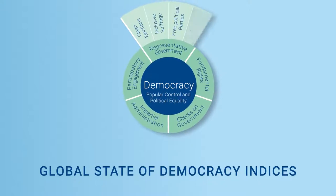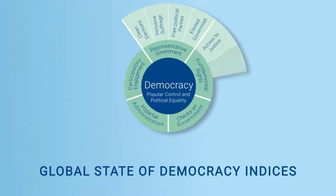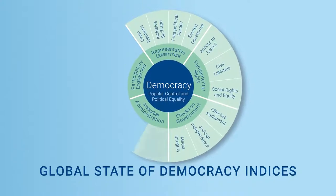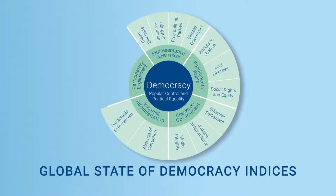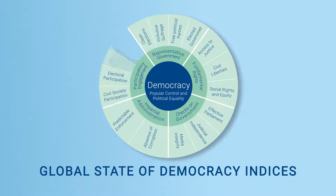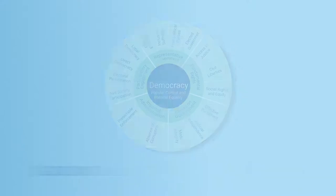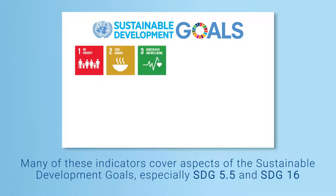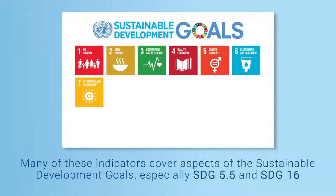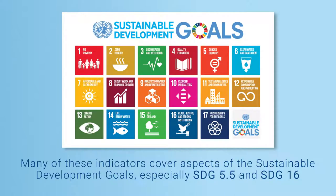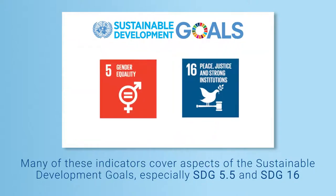In order to assess countries' democratic progress, we aggregate the measurement of 116 individual indicators that span these five broad attributes. Many of these indicators cover aspects of the Sustainable Development Goals, especially SDG 5.5 and SDG 16.